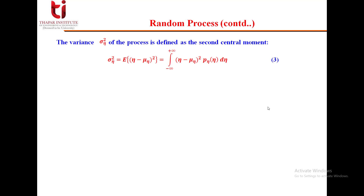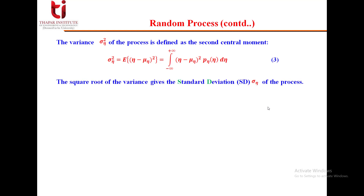The variance σ_n² of the random process is defined as the second central moment — called 'central' because we take the difference across the mean. It is: E[(η − μ_n)²] = integral from −∞ to +∞ of (η − μ_n)² · p(η) dη. The square root of the variance gives the standard deviation σ_n.